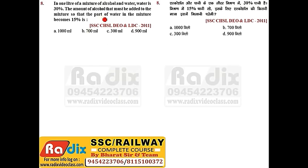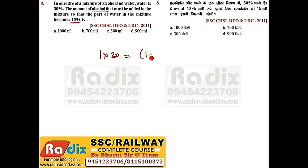Next question. In 1 liter of mixture of alcohol and water, water is 30%. Find the amount of alcohol that must be added so that the part of water in the mixture becomes 15%. We are adding alcohol, so we equate water. 1 liter at 30% water; we add x liters of alcohol so water becomes 15%. Solving gives x = 1 liter or 1000 ml. Answer is option A.